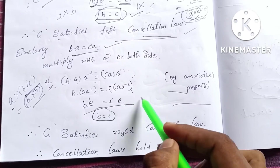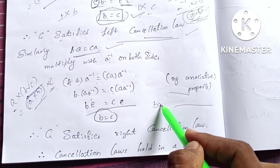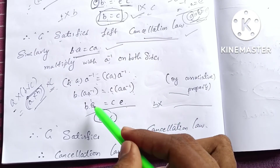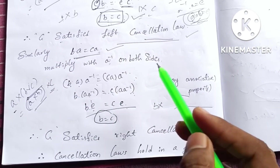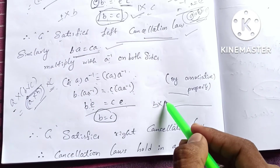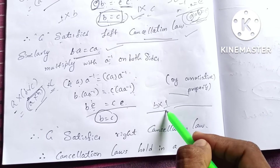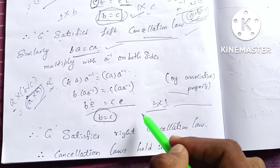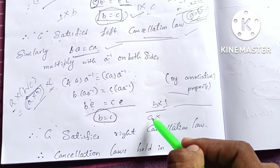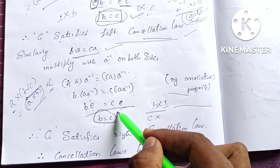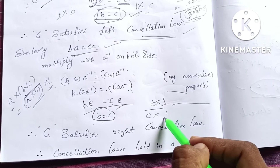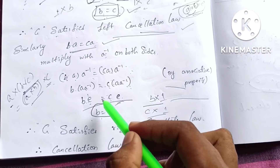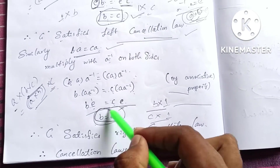Same way, B into E, using the multiplication identity, B into 1 is equal to B, and C into 1 is equal to C. So B is equal to C.